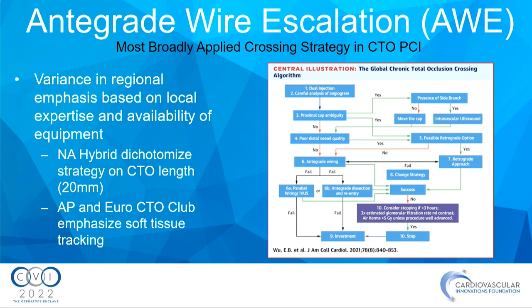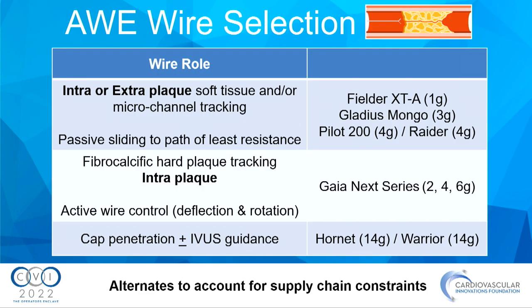The global algorithm's biggest shift from the original hybrid algorithm is the decision point based on whether the lesion is 20 millimeters or longer, which helped decide between ADR, retrograde, or antegrade. The argument is that it may not truly be 20 millimeters long — you can use wires potentially to shorten that distance, IVUS to help, and parallel wires. I group wires for antegrade into three categories.